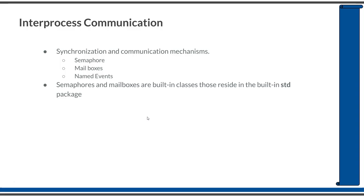These are the SystemVerilog-specific communication and synchronization mechanisms available: semaphores, mailboxes, and named events. Semaphores and named events can be used to synchronize between different processes, and mailboxes can be used to communicate between different processes. Both semaphores and mailboxes are built-in classes in SystemVerilog, placed in the STD standard package. You can consider them as built-in data types, though effectively they are built-in classes.